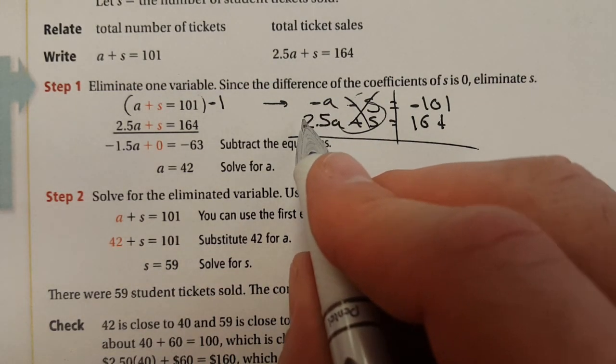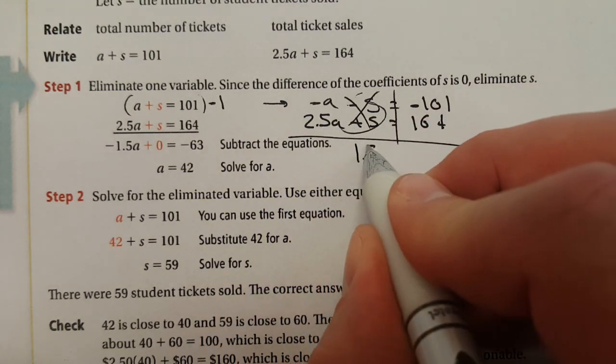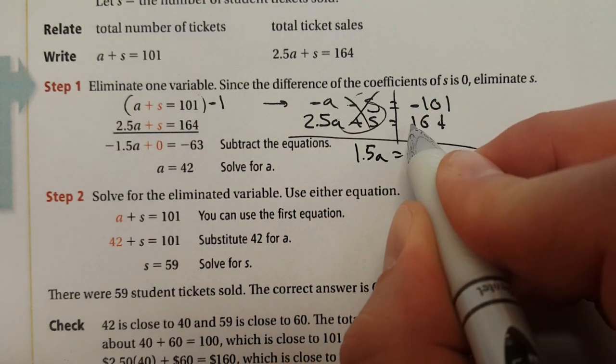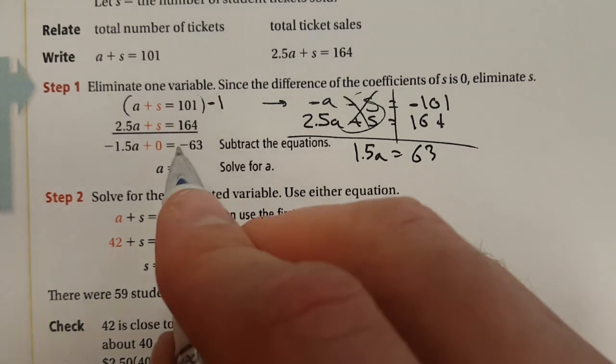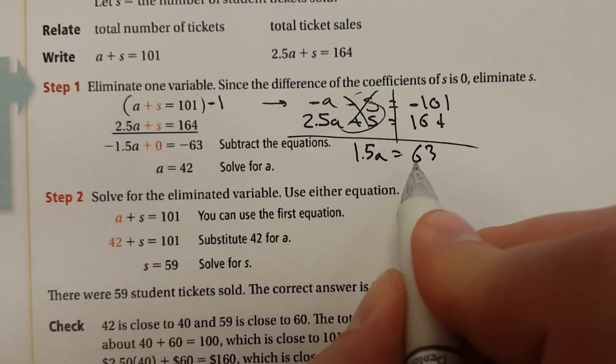So we'll look and see what's left over. 2.5a minus a is 1.5a and then 164 minus 101 is 63. Look at the same thing. They just have negatives. We have positives.